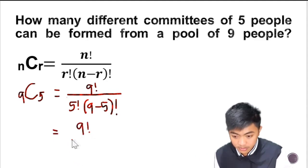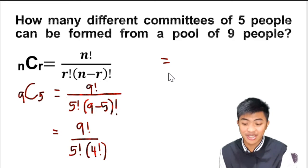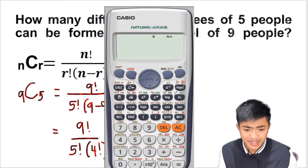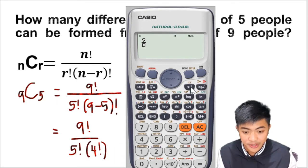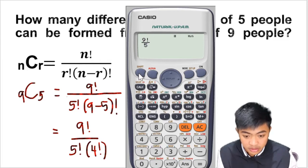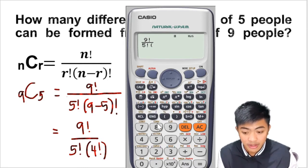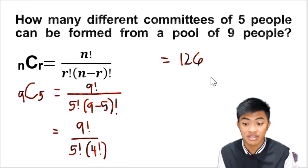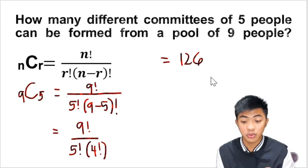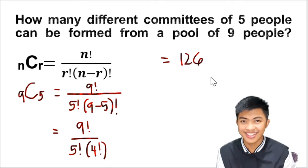Now we simplify. Nine minus five is four, so that will become four factorial. Input this in the calculator. That's a fraction: nine factorial on top, five factorial on the bottom. Remember, we're multiplying those, so don't forget your parentheses. Five factorial times four factorial. Press equals and the answer is 126. So there can be 126 selections. We can form 126 committees of five people from nine people. That's a lot. Let's have another example.